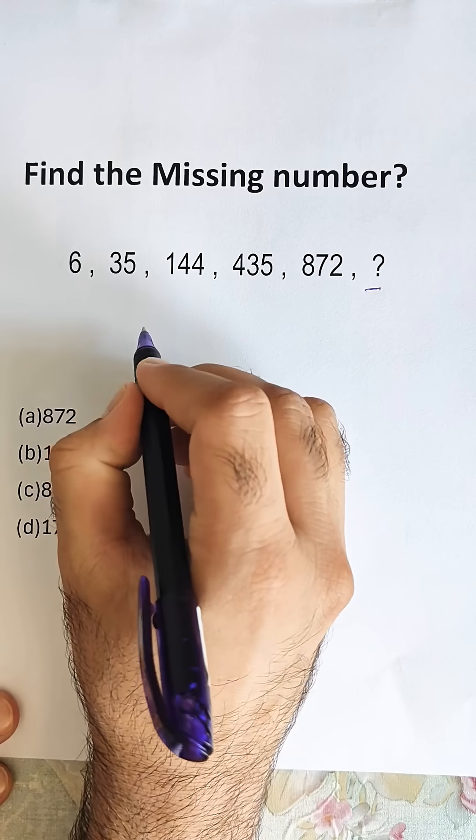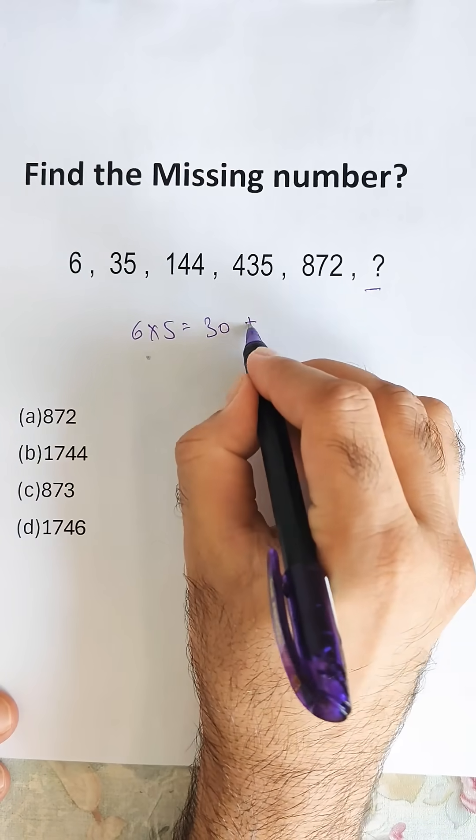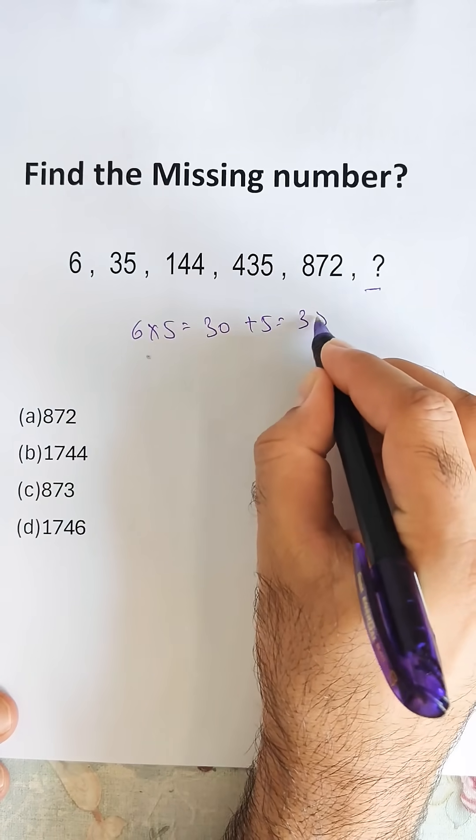What we can do is 6 into 5 is 30, and adding 5 we get 35.